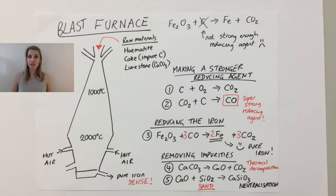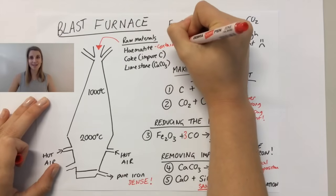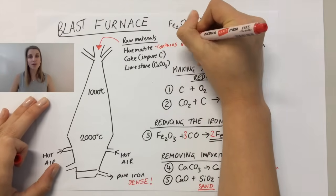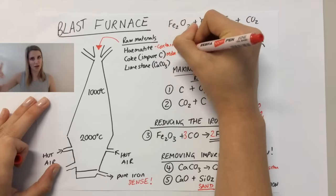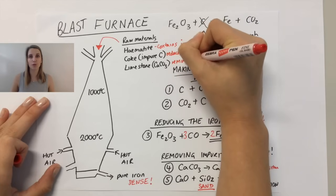Now if we go back to the charge, the things that we put in at the beginning, the raw materials, the hematite is the thing that contains the iron. The carbon is there to reduce the iron via carbon monoxide. And the limestone is there to remove impurities.